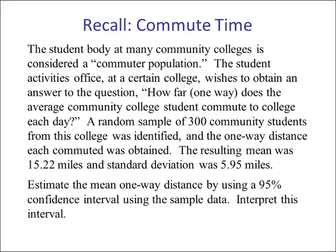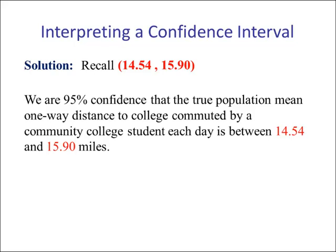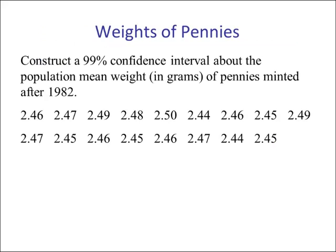Example 3 — commute time: how far one way does the average community college student commute to college each day? From a sample of 300, x-bar was 15.22 and s was 5.95. Interpreting this interval at a 95% confidence level: we are 95% confident that the true population mean one-way distance to college commuted by a community college student each day is between 14.54 and 15.9 miles.